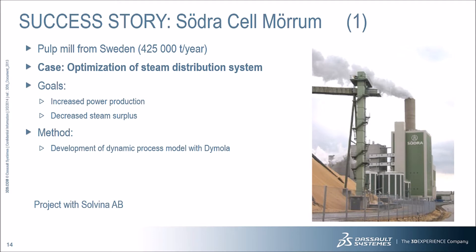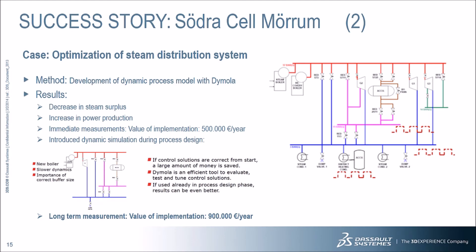A success story for the application of Daimla technology is Södra Selmurum, a pulp mill in Sweden producing over 425,000 tons per year. This work with Solvina AB involved optimization of a steam distribution system with the goals of increasing power production and decreasing steam surplus. A dynamic process model was developed using Daimla to optimize the system. Analytic optimization highlighted critical areas for improvement, including a new boiler, slower dynamics, and the importance of a correct buffer size. The resulting decrease in steam surplus and increase in power production yielded an immediate value of €500,000 per year, and the long-term value has been measured at €900,000 per year.